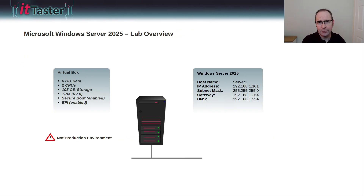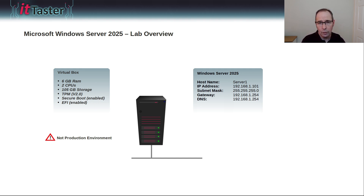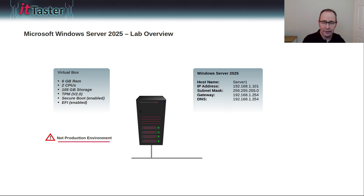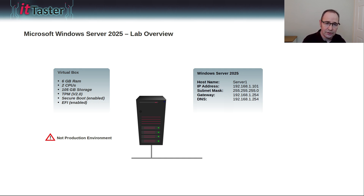Here's a quick overview of the lab settings I'm going to use for this video. I'm running VirtualBox and I've configured a virtual machine with the following: 6GB of RAM, 2 CPUs, 105GB of storage, a Trusted Platform Module TPM version 2, secure boot enabled, and EFI also enabled. This is quite a low specification, however it is only for the test lab. I've also listed the IP address settings. Once we've installed Windows Server 2025, I'll perform some initial configuration tasks so I can install server roles like Active Directory Domain Services later on. So let's begin the installation.